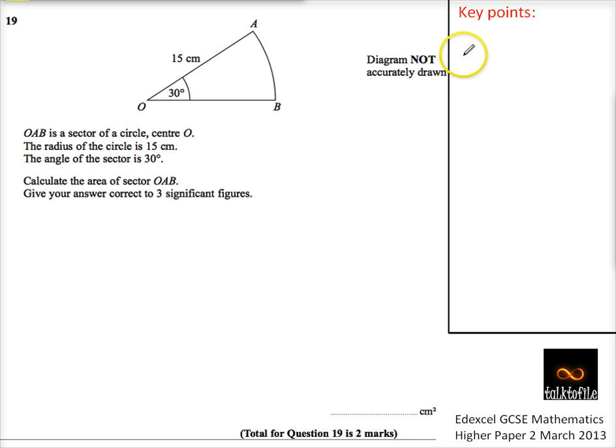We need to know some key points. So the area of the circle, as we know, is πr², and we know that the circumference of the circle is π times diameter, which is 2πr.